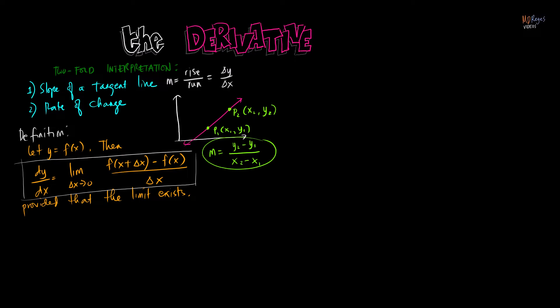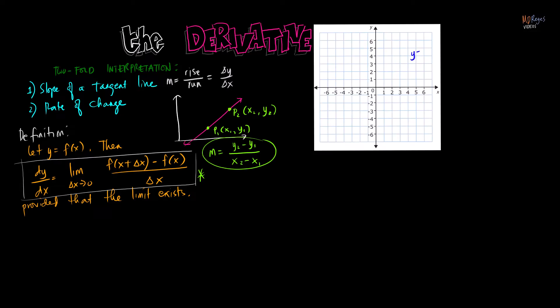Now let me relate the definition of the derivative of a function to the slope of a line. Given the graph of function f, say we have two points on the graph — let's call them P and Q. If I connect the points P and Q, I would have a secant line to the graph of the function.